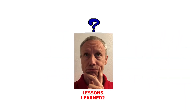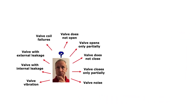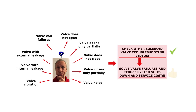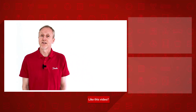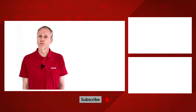To summarize, from this solenoid valve troubleshooting video, you now know how to identify possible valve failures in a refrigeration system. This way ensuring that you can efficiently identify root causes, make corrective actions, and minimize system shutdown time and service costs. Please search for the other online solenoid valve troubleshooting videos to learn about relevant valve failure root causes and how to solve them with suitable corrective actions. Have a look at the other Danfoss online videos about solenoid valve troubleshooting and other videos where I talk about valves. Thanks for watching.